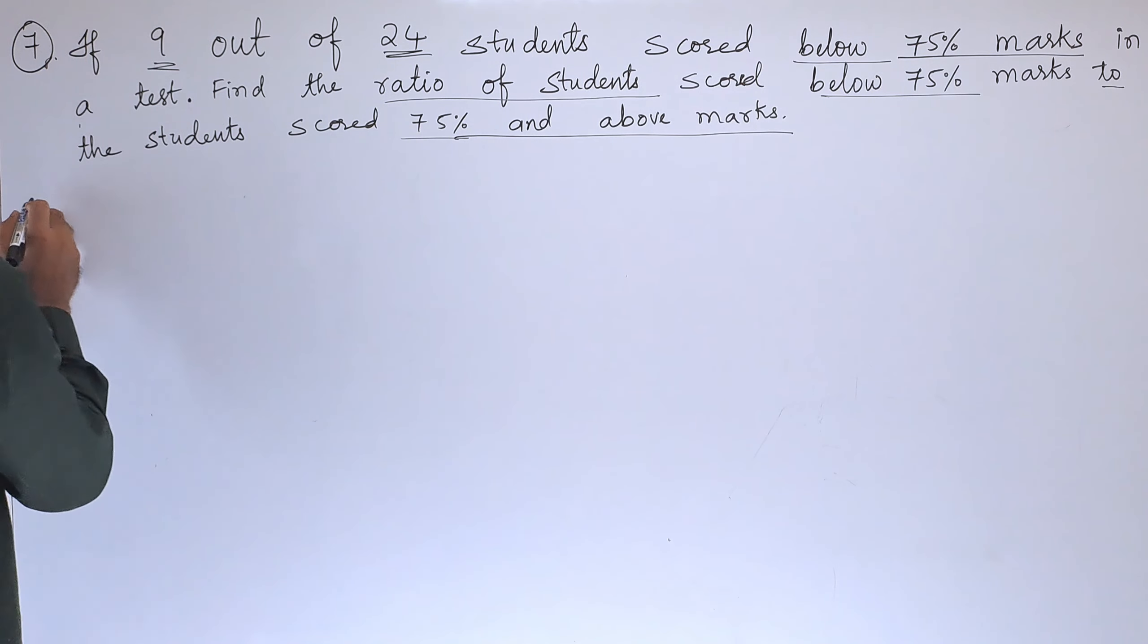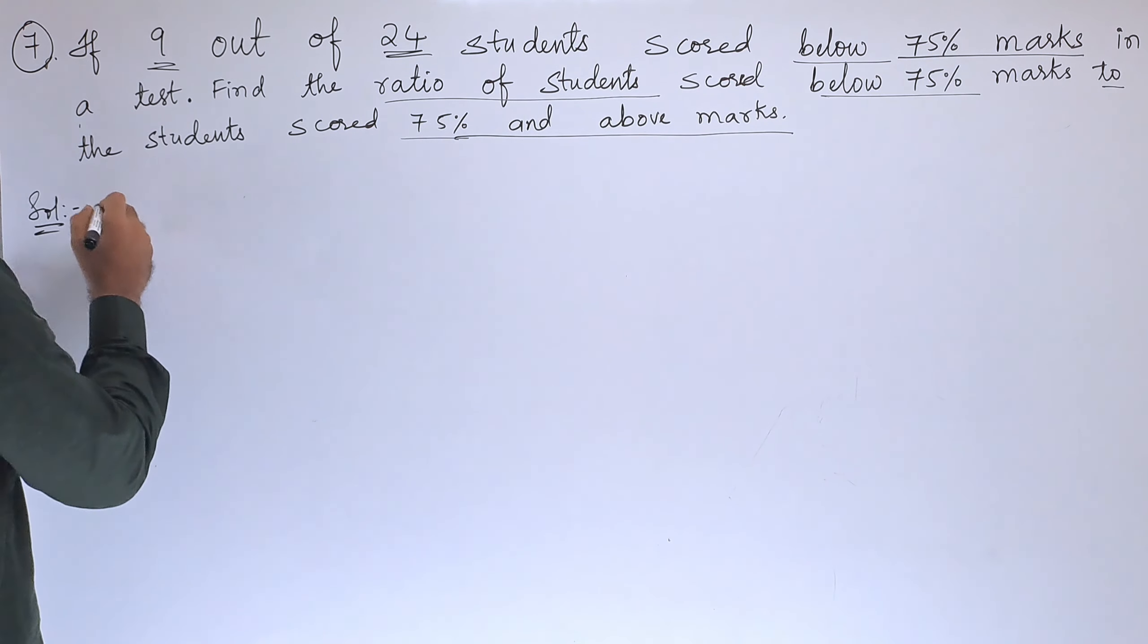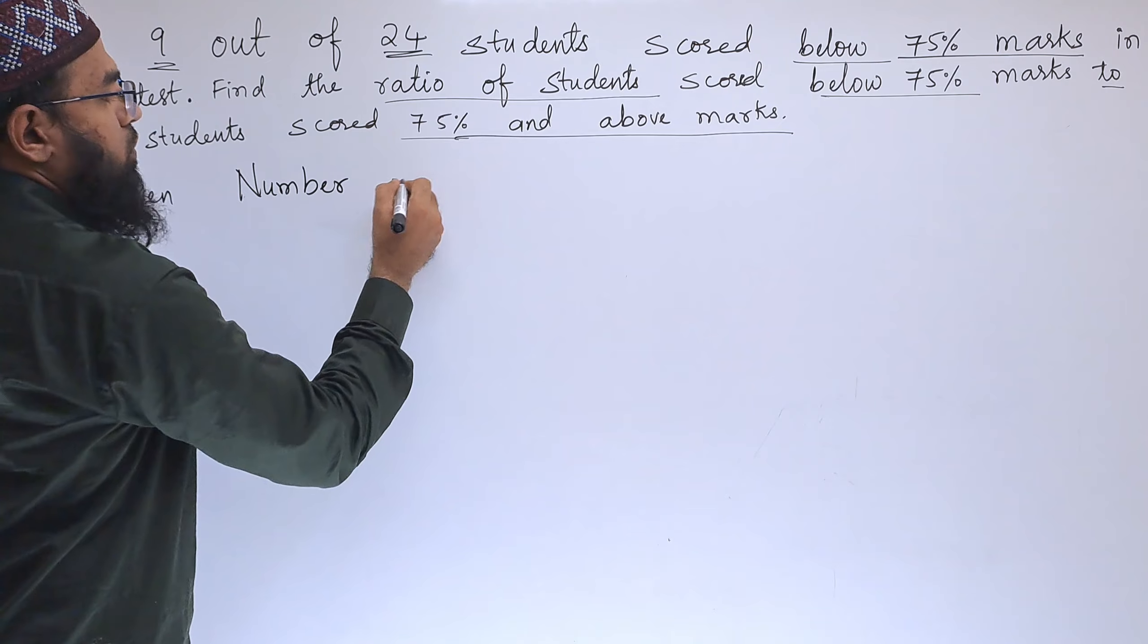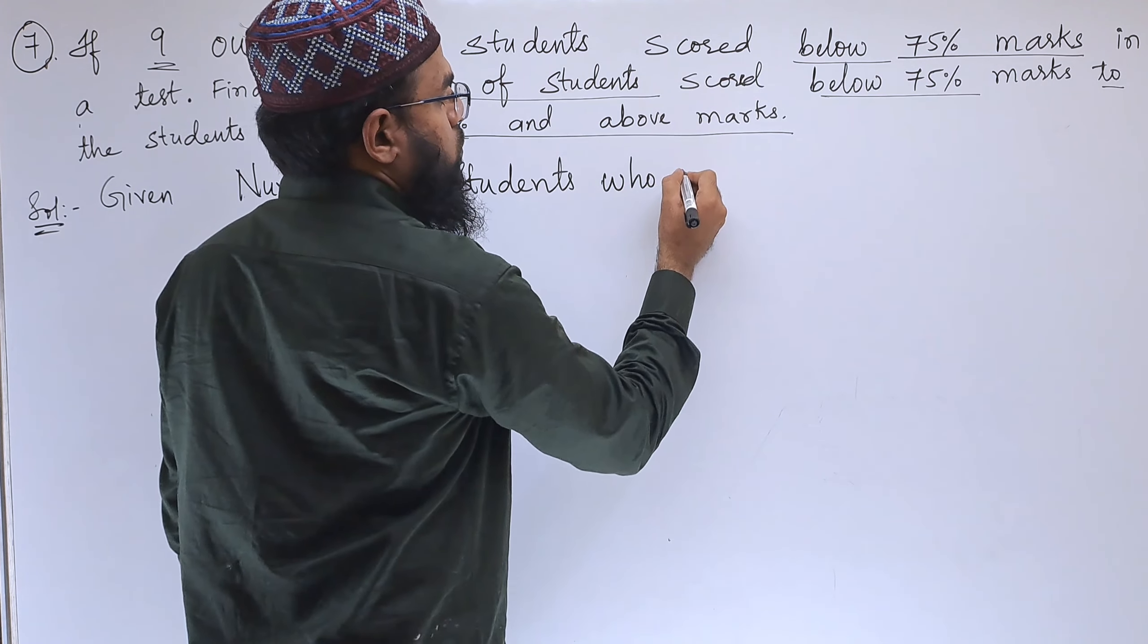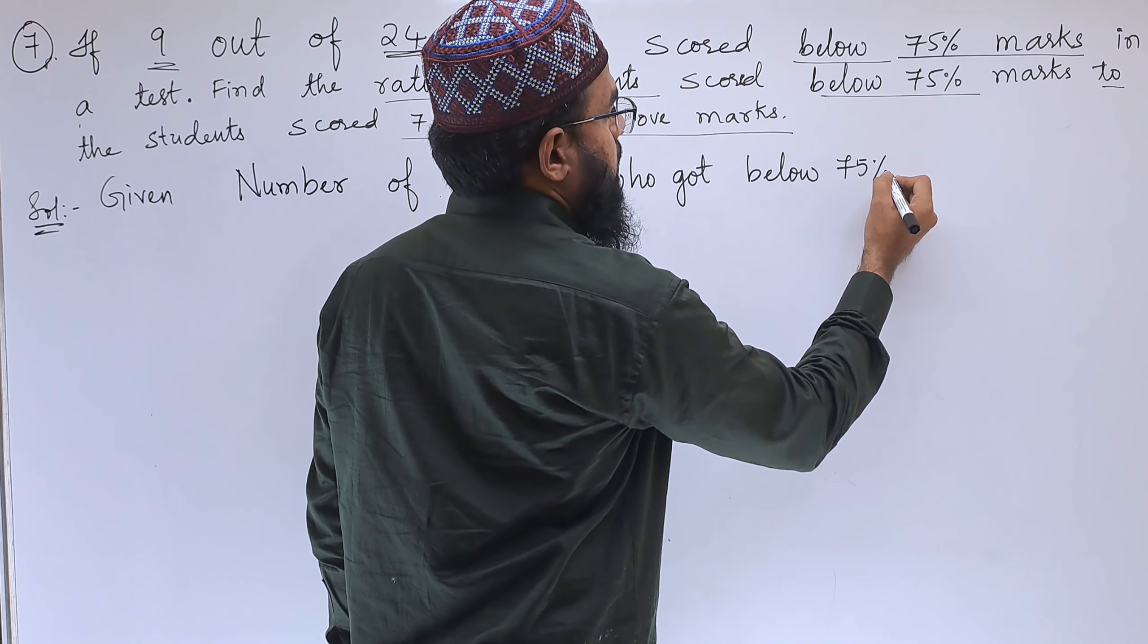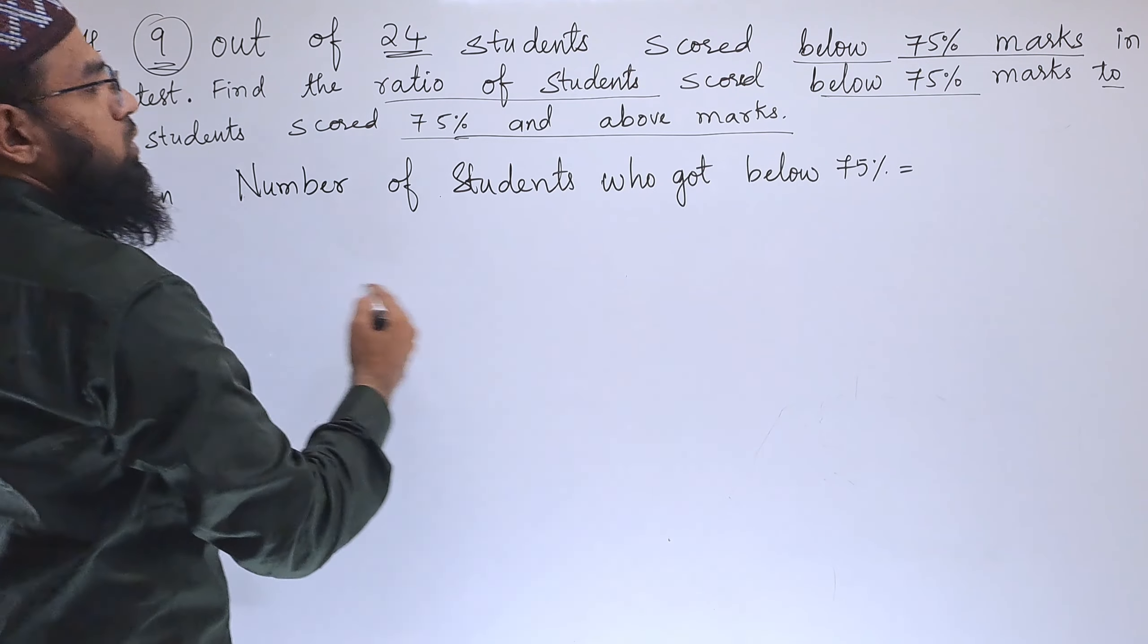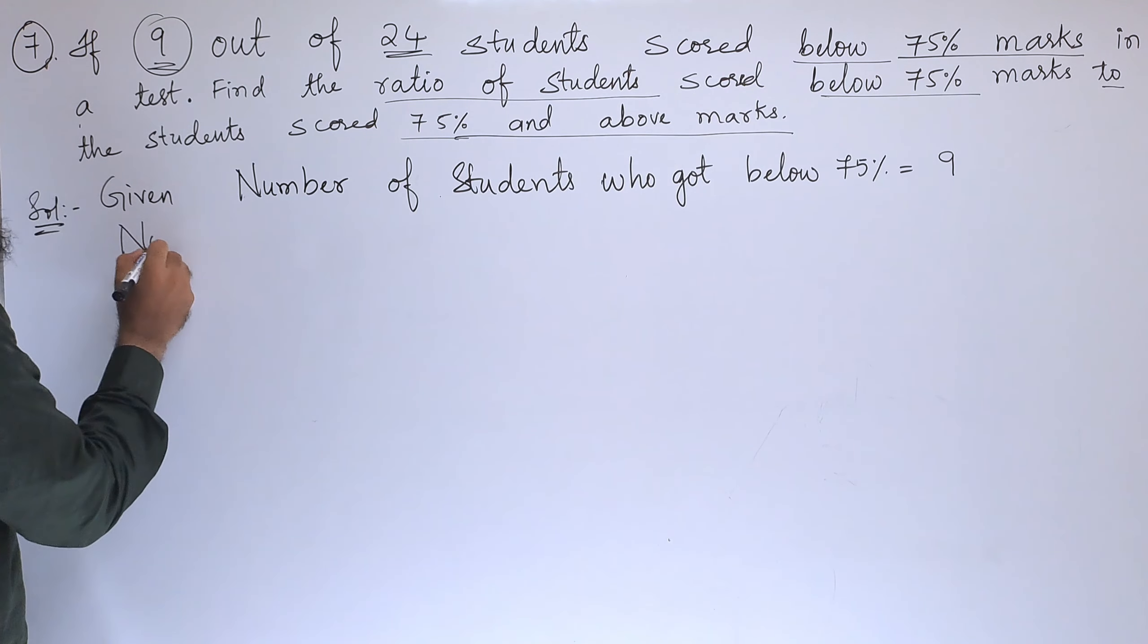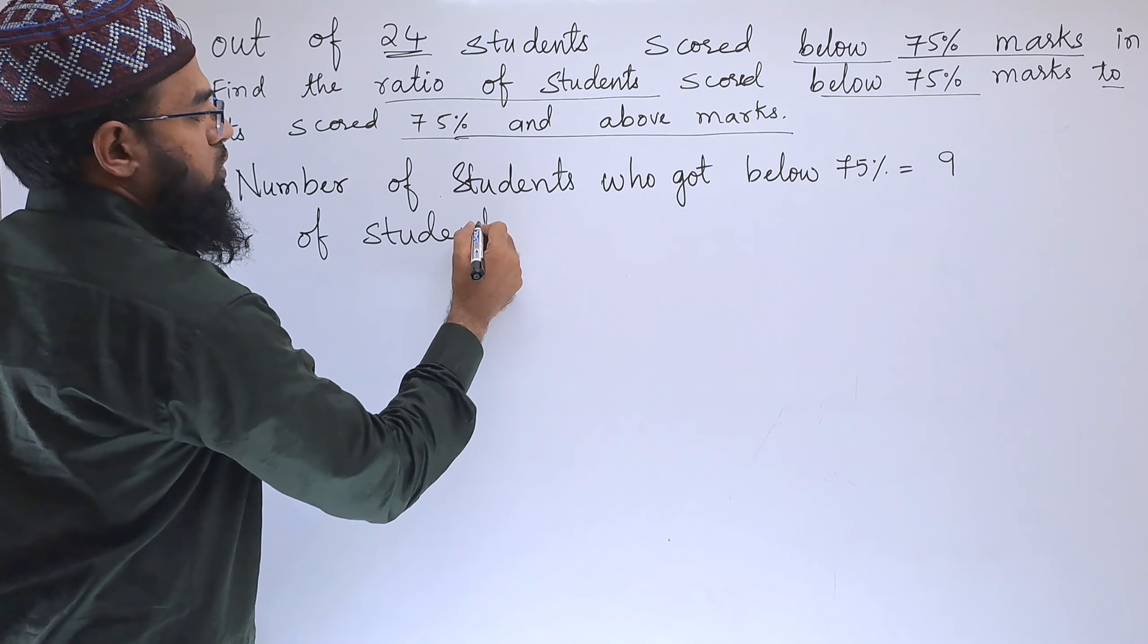Let us write the solution. First, we will write down what is given. Given: Number of students who got below 75 percent is equal to 9.